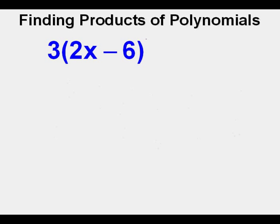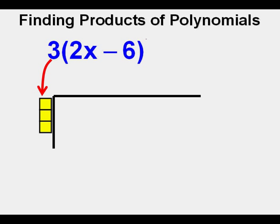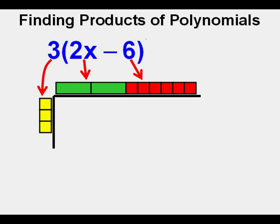The first problem we'll look at is 3 times quantity 2x minus 6. When I say quantity 2x minus 6, I use the word quantity as a verbal cue that what I say next after quantity will be written within parentheses. We first set up a bracket or frame we will use to multiply our algebra tiles. We line up three little yellow squares representing the number three here on the left side. Now we line up the factor on the right side first by placing two x's here at the top of the bracket. Next we place six little red squares to represent minus 6 right next to the two x's.